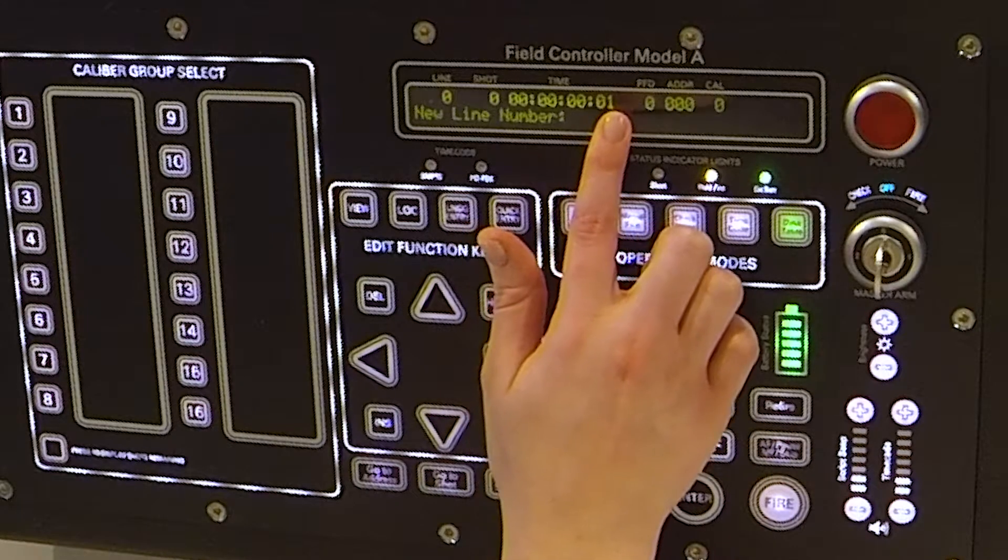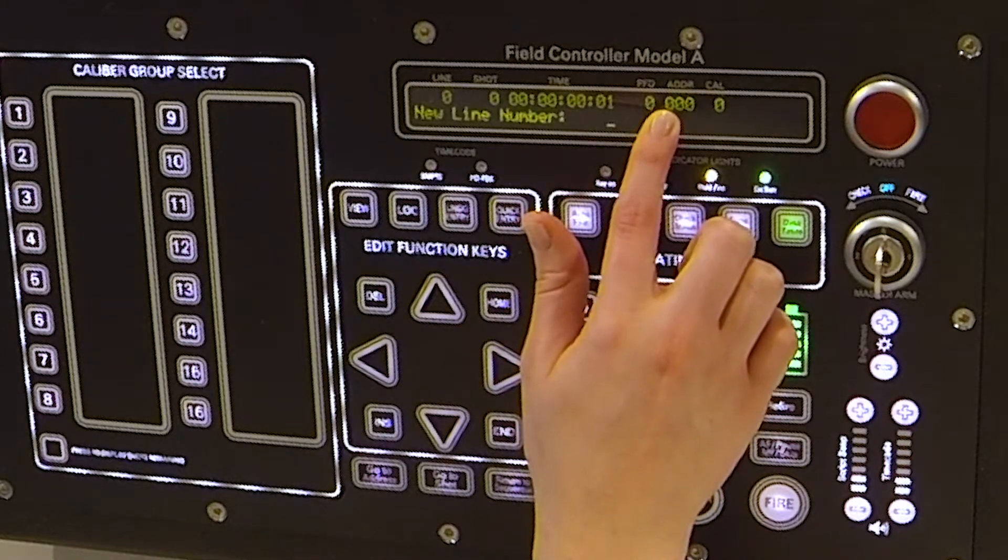A pyrotechnic event is defined by its shot number, the show time, the pre-fire time and the address. You can also assign a caliper group or hazard lockout.